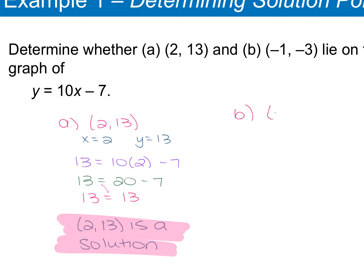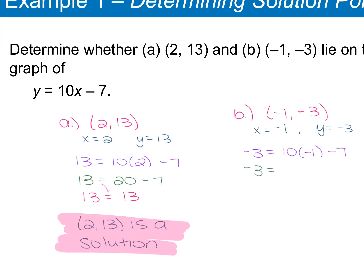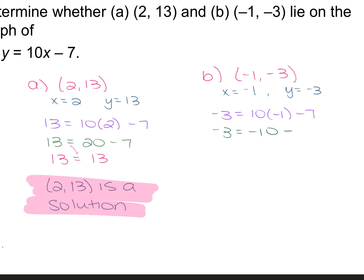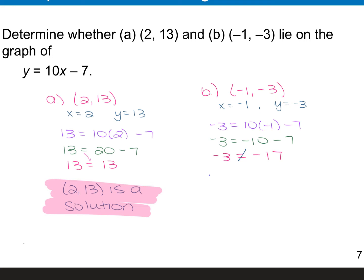For part b, we're given the ordered pair (-1, -3). We plug -1 in for x and -3 in for y: -3 = 10 times -1 minus 7. That gives us -3 = -10 - 7, and -10 minus 7 is -17. So we have -3 = -17, which is a false statement, meaning the ordered pair (-1, -3) is not a solution.